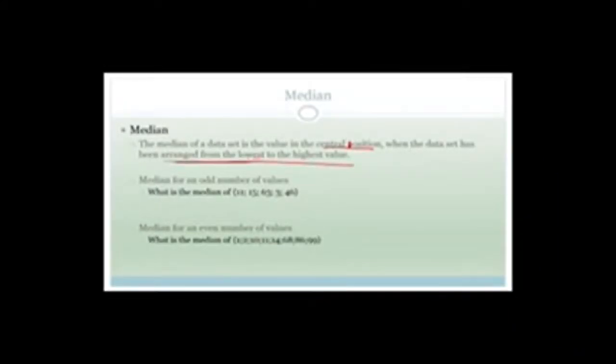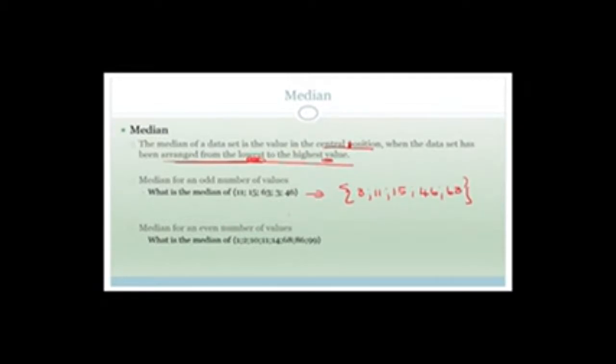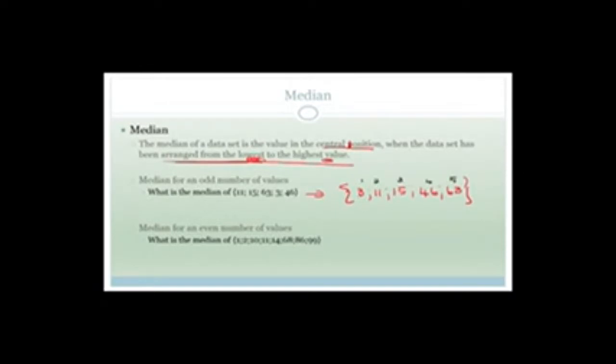For an odd number of values, first we have to arrange them from smallest to biggest. So this set — 11, 15, 63, 3, 46 — is not in order. Rearranged, it becomes 3, 11, 15, 46, 63. Check we've got all five: 1, 2, 3, 4, 5. The middle value is the median. We've got five numbers, so counting from the left it's 1, 2, and counting from the right it's 1, 2 — so the median is 15.